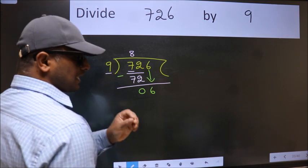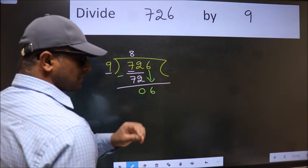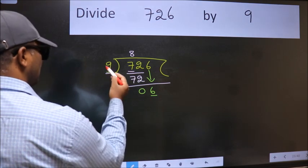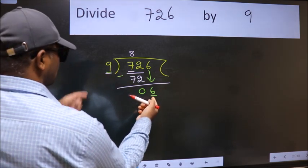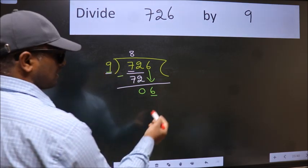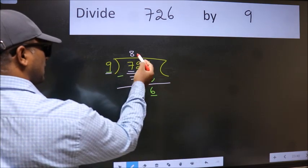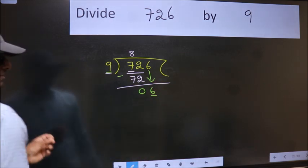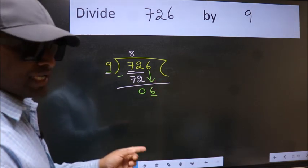After this step, the mistake happens. Here we have 6 and here 9. 6 is smaller than 9. So what many do is they directly put a dot and take 0, which is wrong. Why is it wrong?